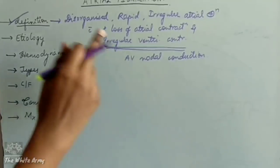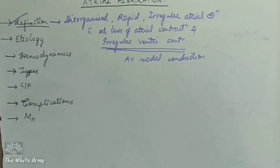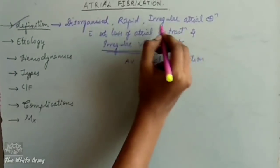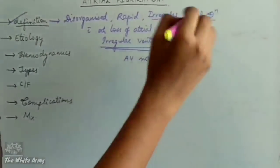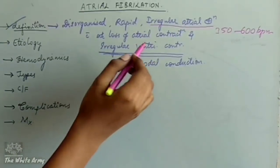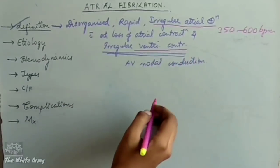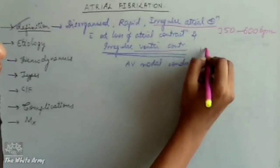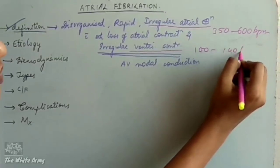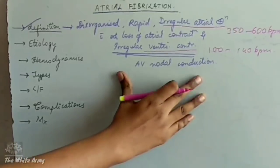Atrial fibrillation is defined as disorganized, rapid, irregular atrial stimulation. The impulses from the atrium are at the rate of 350 to 600 beats per minute, but it is associated with loss of atrial contraction. The irregular ventricular contractions occur at the rate of 100 to 140 beats per minute. This is the definition of atrial fibrillation.